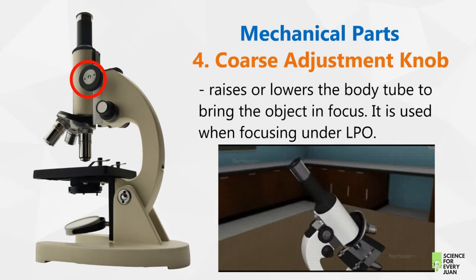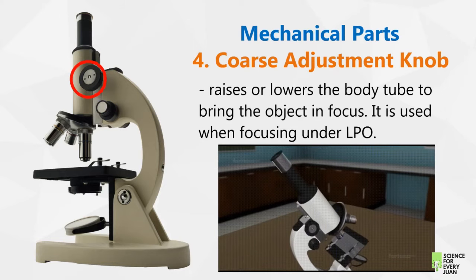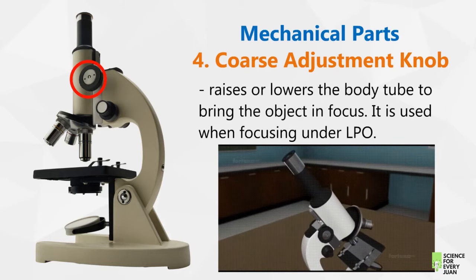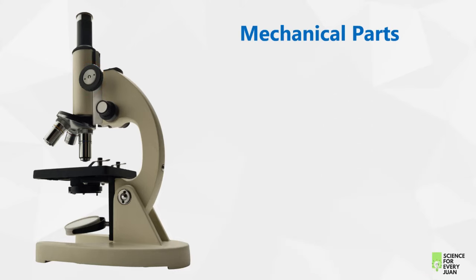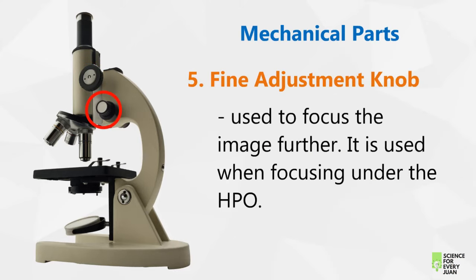When using the coarse adjustment knob, one should look at the side to avoid breaking the slide. The next one is the fine adjustment knob — this is the smaller knob used to focus the image further, and it is used when focusing under the high power objective.